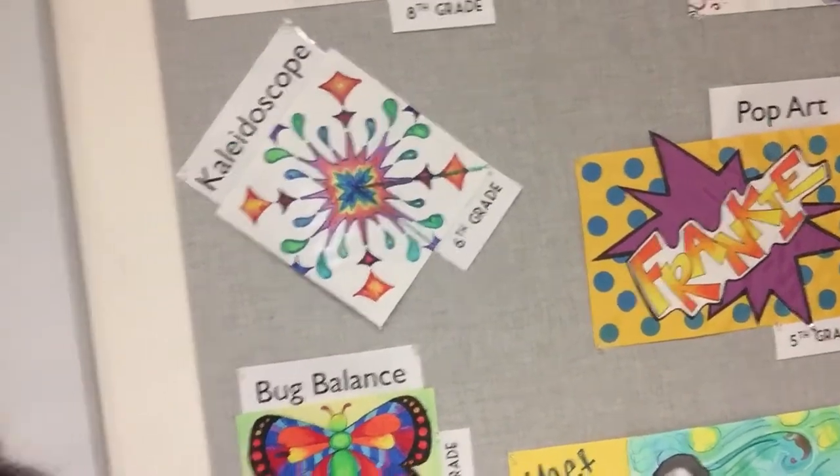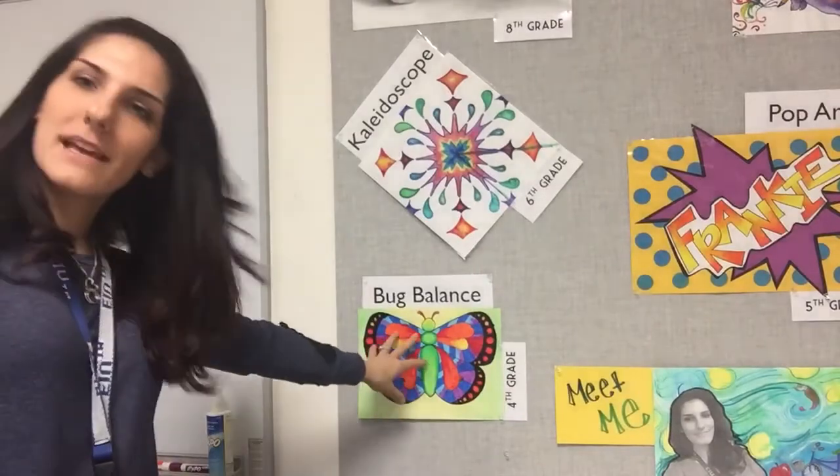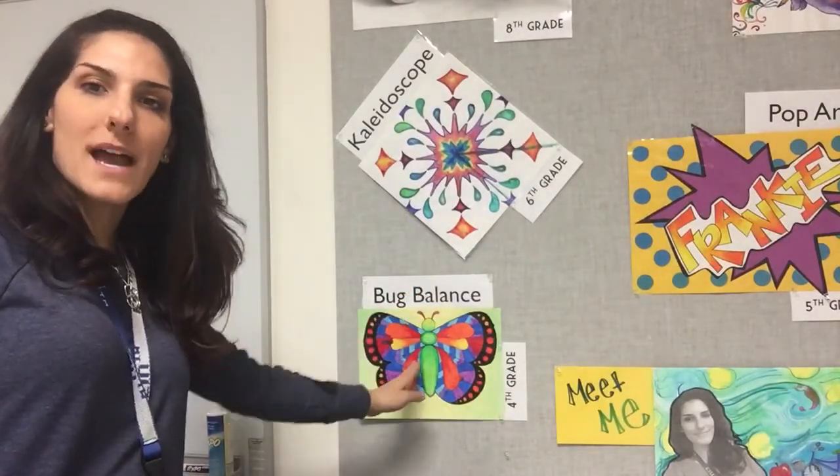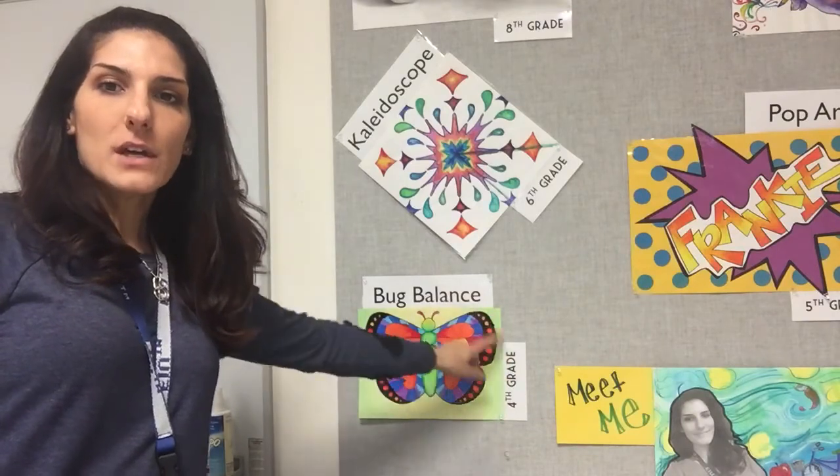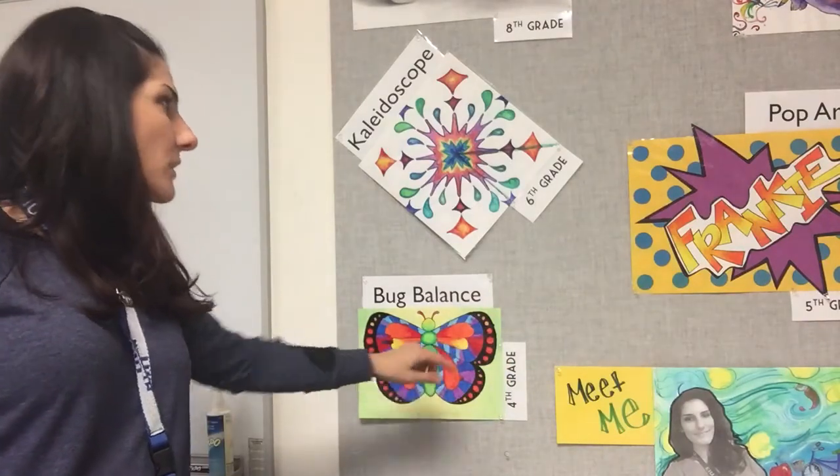For this one, we draw half the bug on one side, transfer to the other half, trace in permanent marker, fill with oil pastels, and blend to create tertiary colors. This one is filled in with watercolor mixtures and gradations.